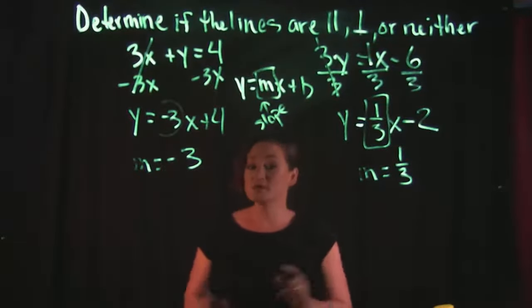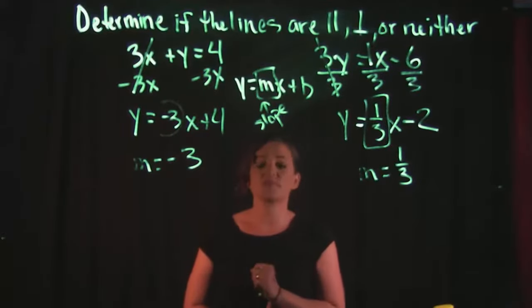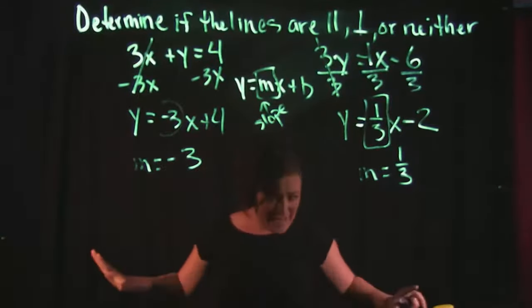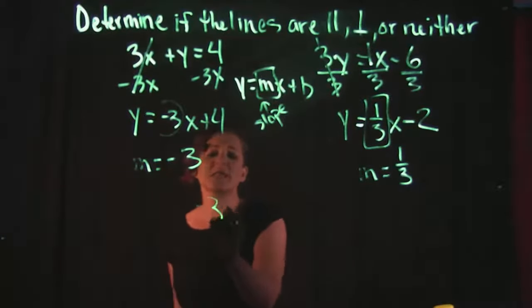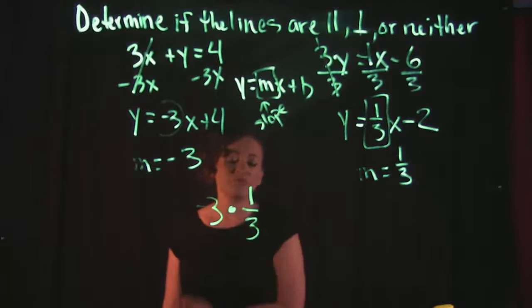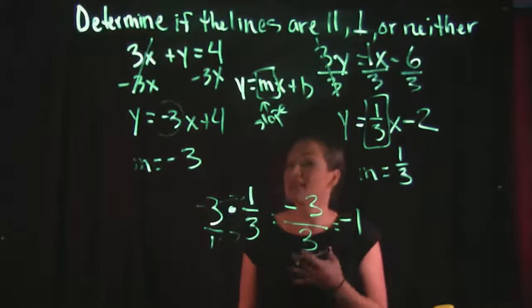Now the rule for perpendicular says this: take the slopes, multiply them together. If you get a negative 1, they are perpendicular. So I need to take negative 3 and multiply it by 1/3. Since I'm dealing with a fraction, I'm going to do fraction multiplication. I'm going to put that negative 3 over 1 so I can multiply across here. Negative 3 times 1 is negative 3 over 1 times 3 is 3. If I simplify this, negative 3 divided by 3 is a negative 1.